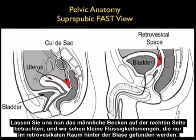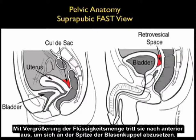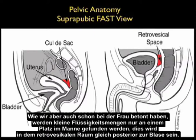In the male pelvis, small amounts of fluid will only be found in the retrovesical space behind the bladder. As the amount of fluid enlarges it will come anterior to settle out over the top of the dome of the bladder, but small amounts of fluid will only be found in that retrovesical space immediately posterior to the bladder.